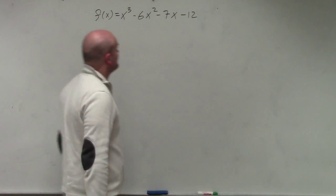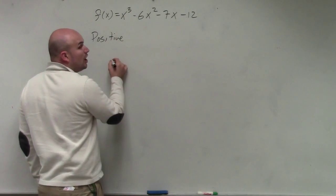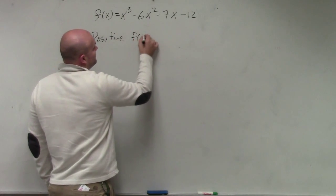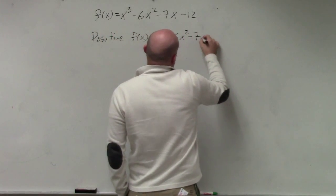So if I set this equal to f of x, if I want to find the number of positive possible real zeros, all I'm going to do is take my function f of x and find the number of sign changes. You don't really need to rewrite it.